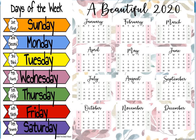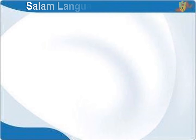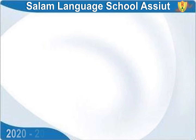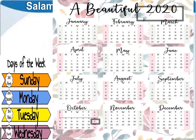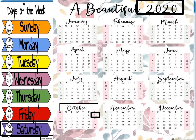We have seven days in a week, and also we have 12 months in a year. Today is Saturday, 3rd of October 2020.